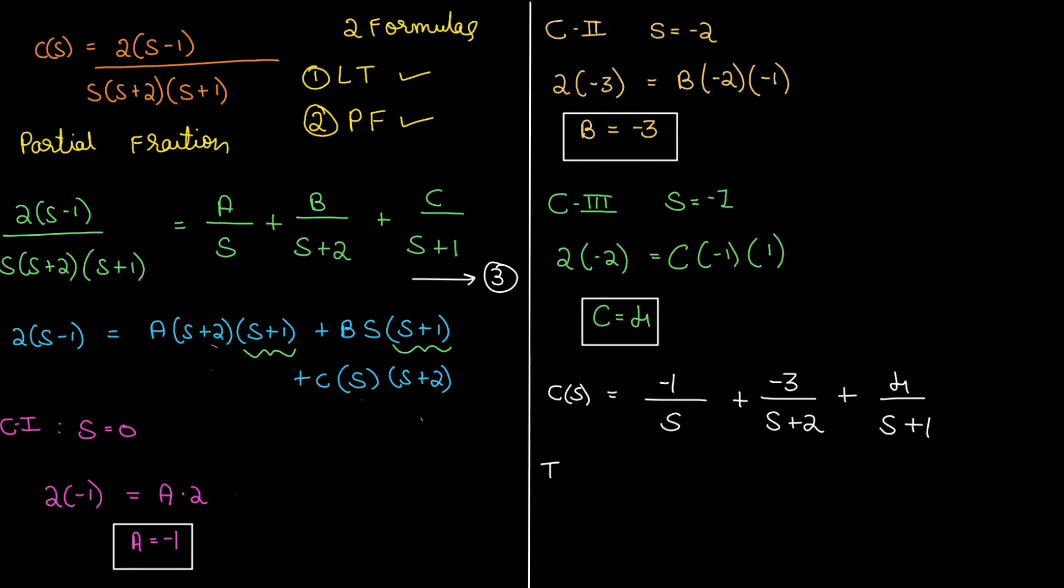On taking inverse Laplace transform, we will have C(t) as minus u(t) minus 3e^(minus 2t) plus 4e^(minus t). That means we have our answer.